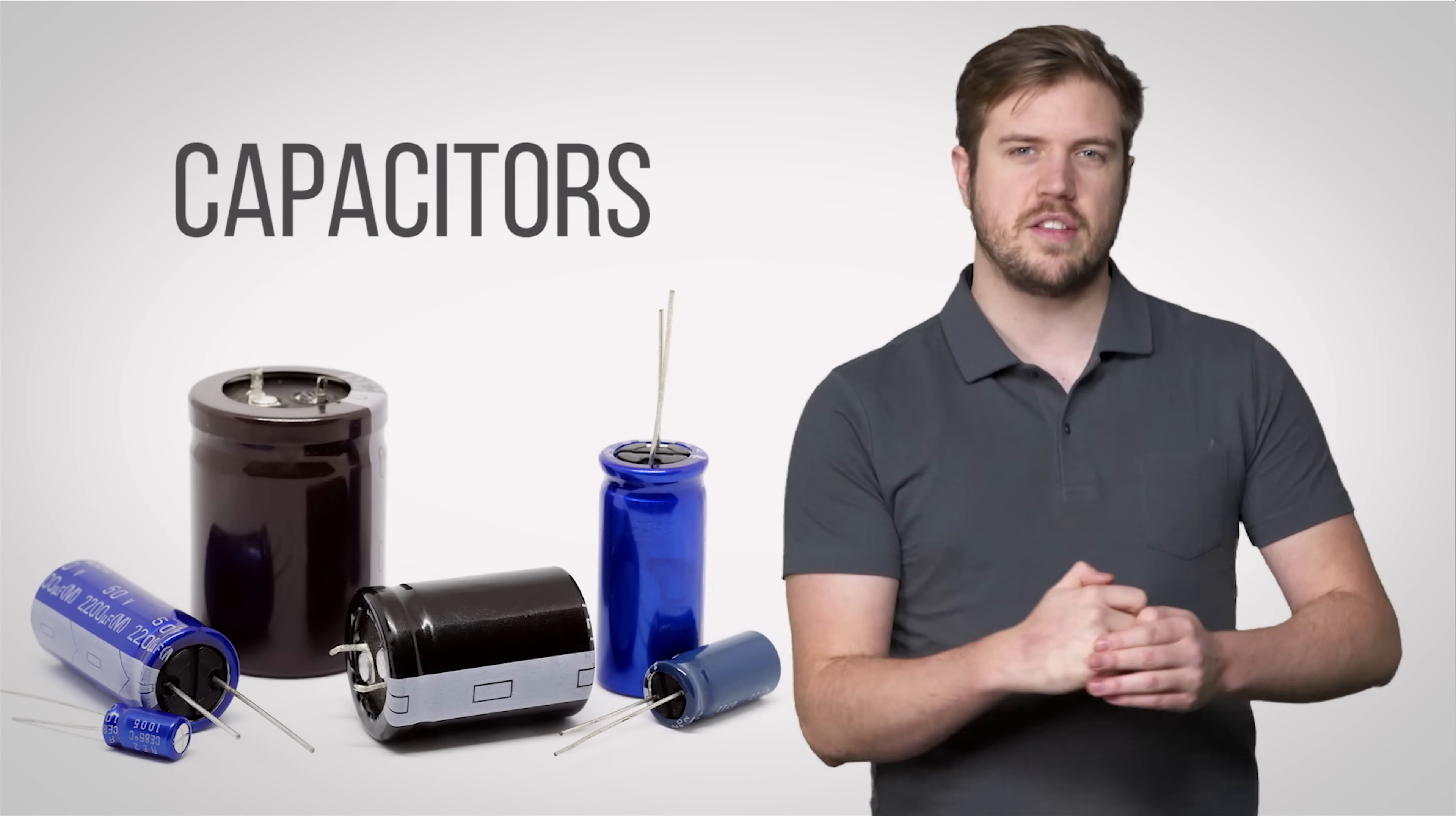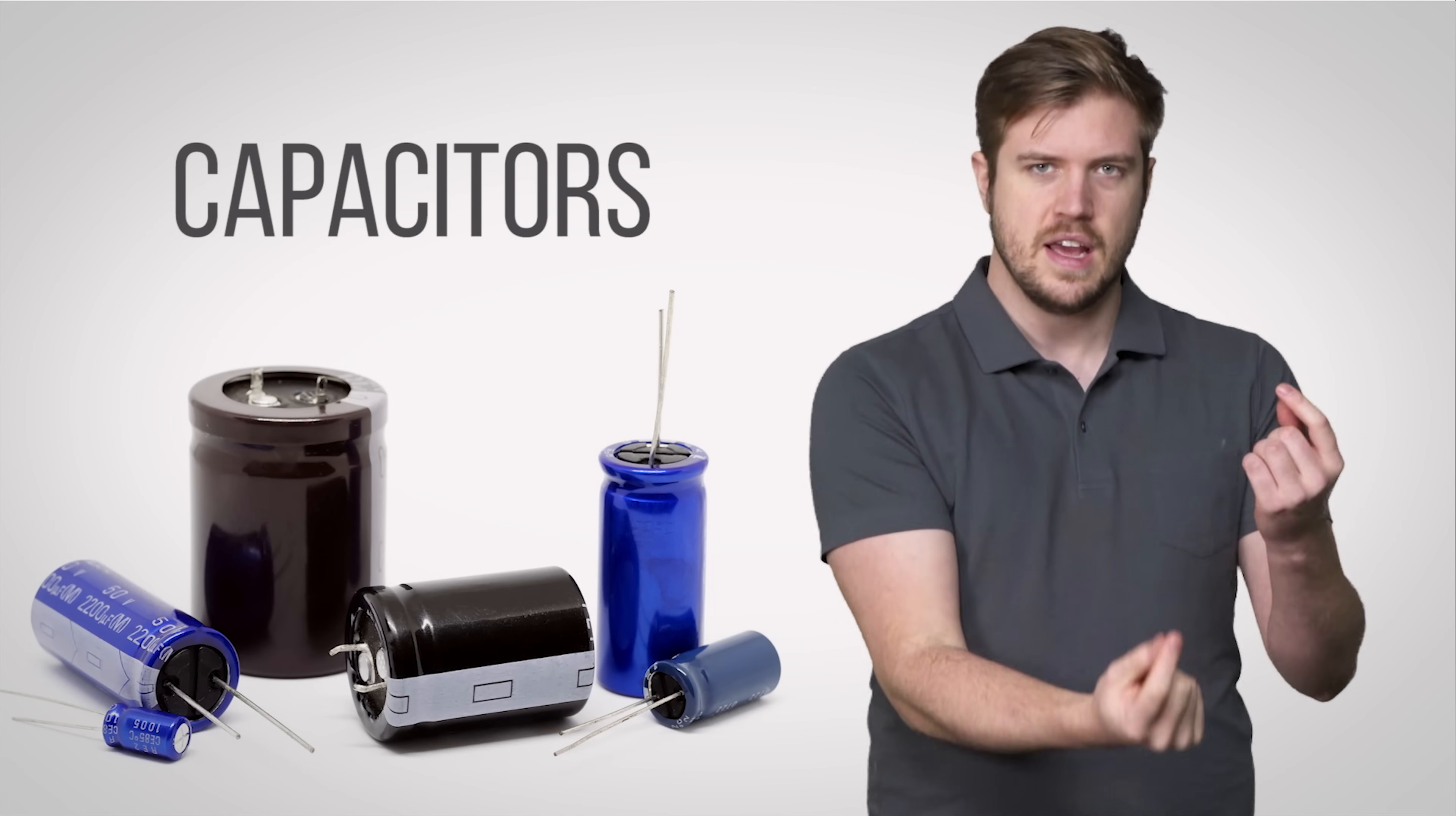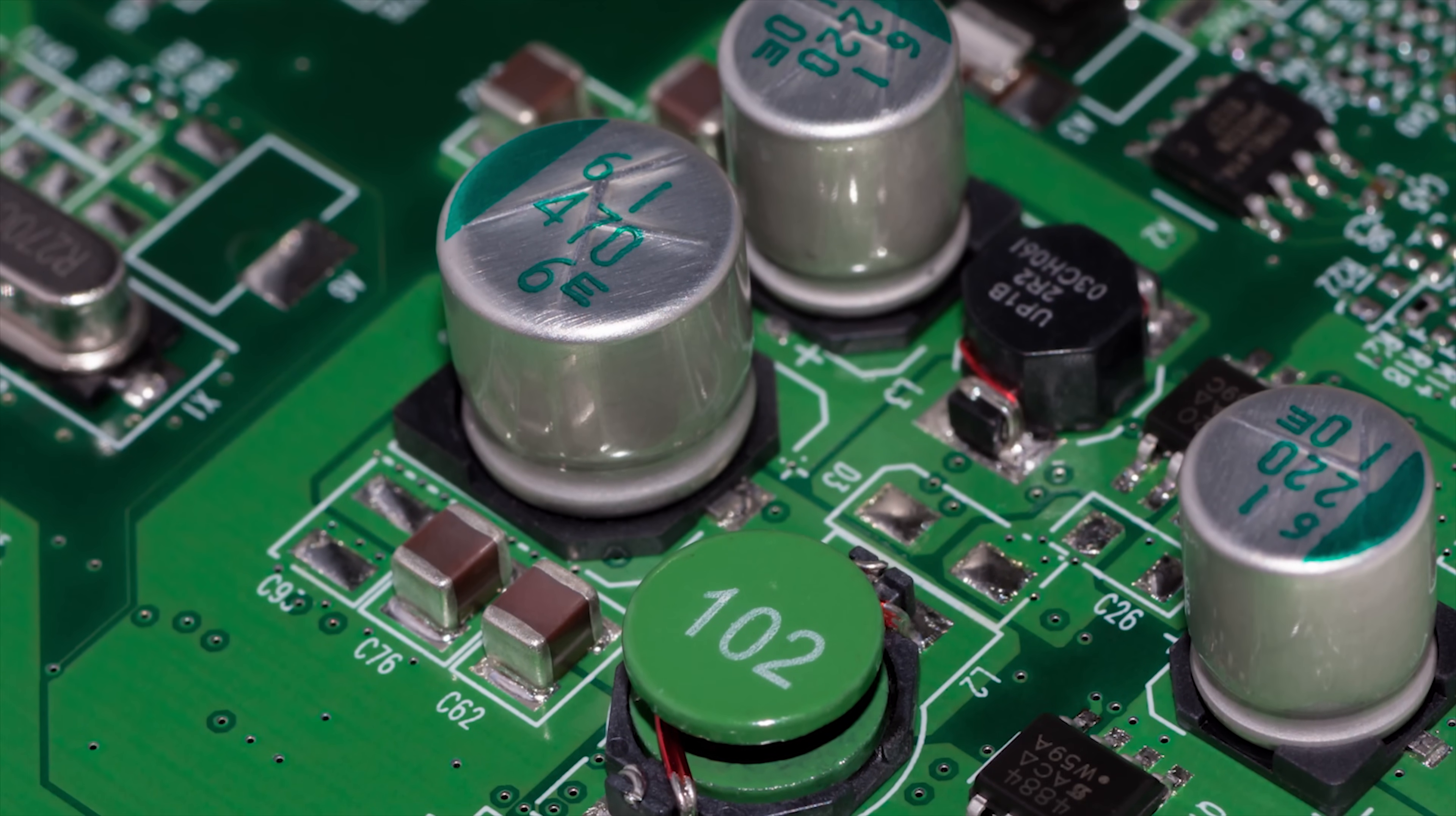So because everything in your PC needs a very specific amount of power, your board has lots of capacitors on it. Those are the cylindrical looking things that poke out of your motherboard like little tiny water towers in a miniature city.